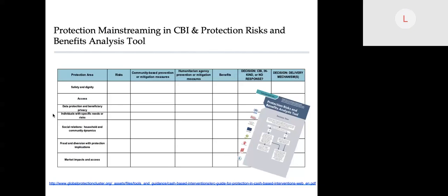Examples of mitigation measures for protection risks include risks related to safety and dignity, fraud, theft, acceptance of cash as a suitable modality, social relations, and others.